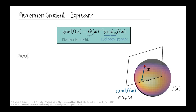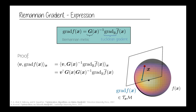To prove this satisfies the directional derivative relationship: take the inner product between a direction and the Riemannian gradient, defined on the Riemannian manifold. Expanding — since the gradient equals the Riemannian metric inverse times the Euclidean gradient — and plugging in the Riemannian metric, the metric and its transpose cancel out. You're left with the inner product between the direction and the Euclidean gradient, which equals the Euclidean directional derivative, corresponding to the directional derivative on the manifold. So the relationship holds.